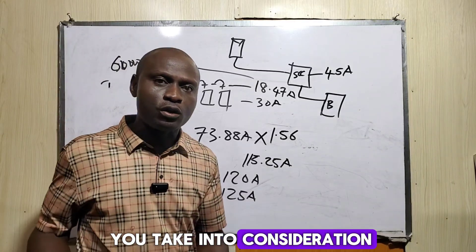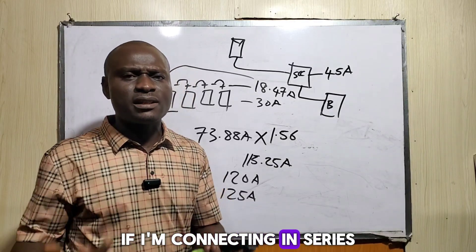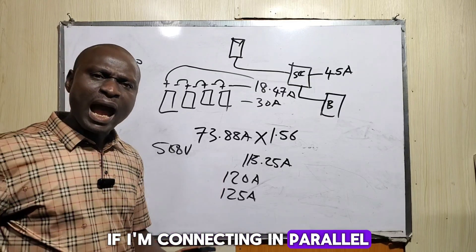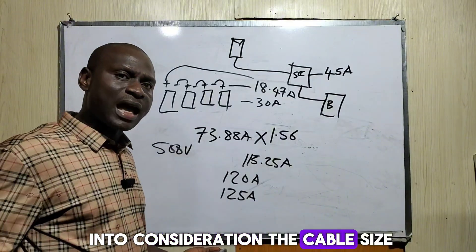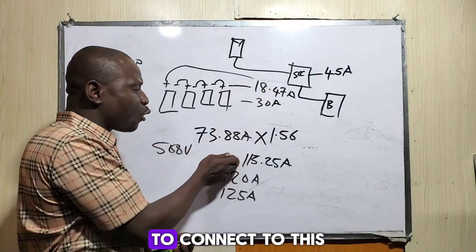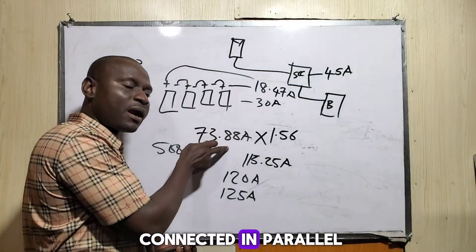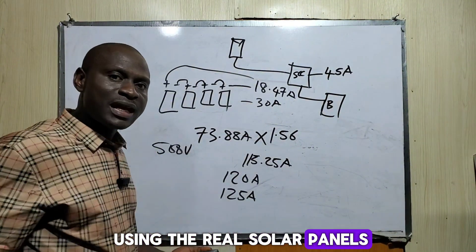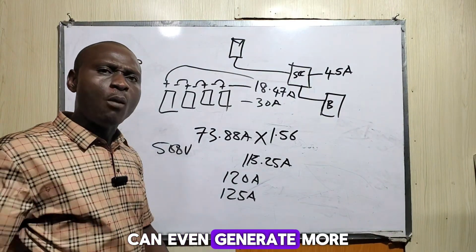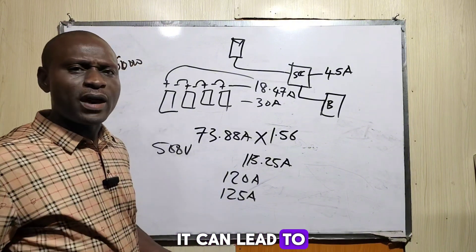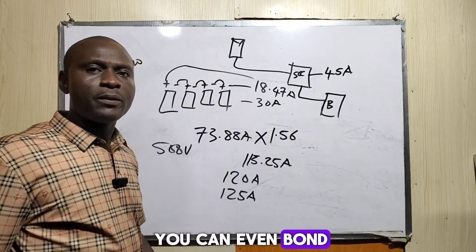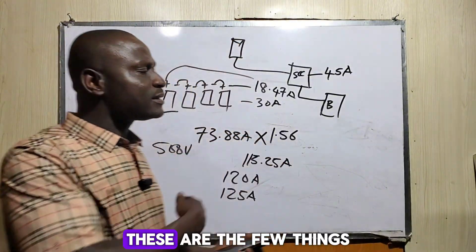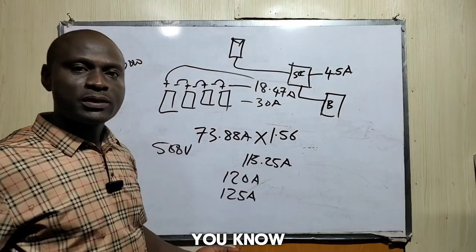If connecting in parallel, you need a much larger cable and a larger breaker. If you use the same cable as for a series connection on a parallel system, the cable will definitely melt and can lead to a fire hazard — the breaker can also trip or burn. These things are very important when sizing a solar power system.